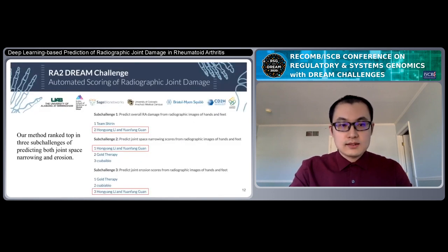Finally, on the held-out test set, our model ranked top in three sub-challenges of predicting both joint space narrowing and erosion. Thank you for your attention and I would like to take any questions at the poster session.